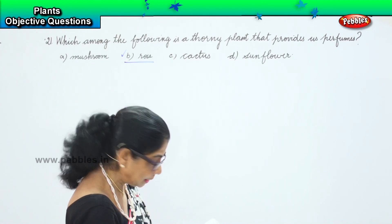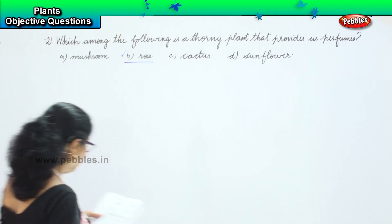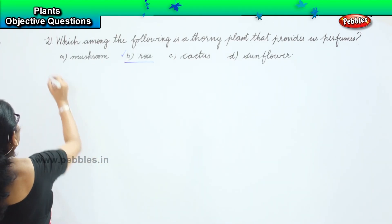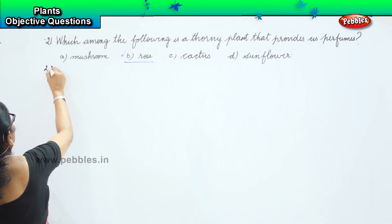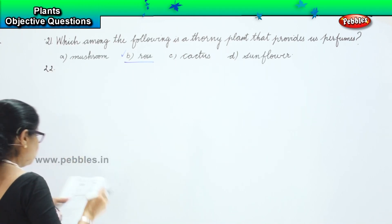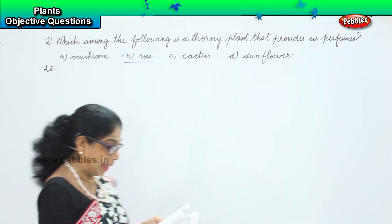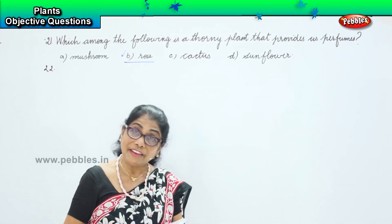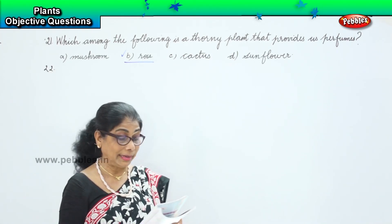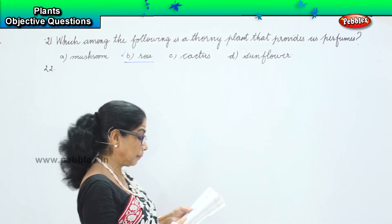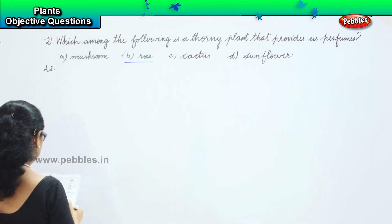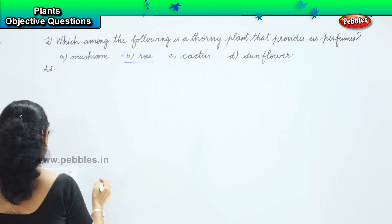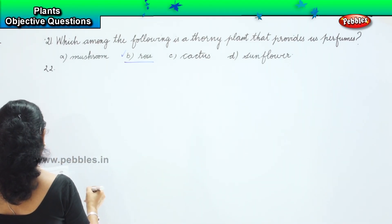The next question: you have column 1 and column 2, and we have to match them and find the correct option. Match column A with B.